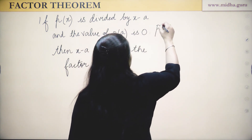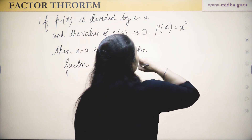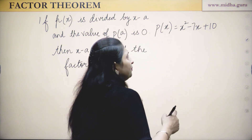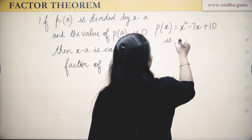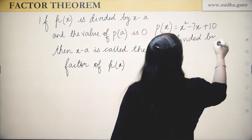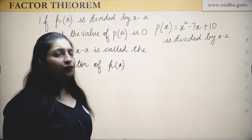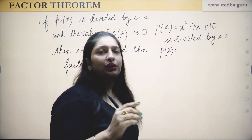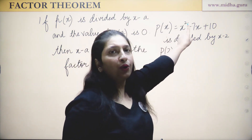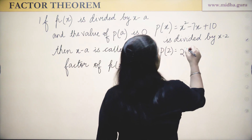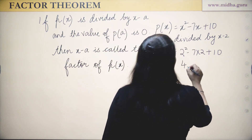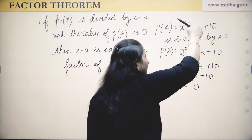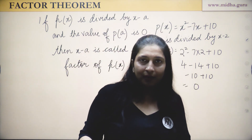Let's understand the Factor Theorem with an example. Suppose p(x) = x² − 7x + 10, divided by x − 2. To find the remainder, equate x − 2 = 0, so x = 2. Find p(2): 4 − 14 + 10 = 0. Since p(2) = 0, that means x − 2 is a factor of x² − 7x + 10. I think the remainder and factor theorem must now be clear to all students — it's a very easy chapter.